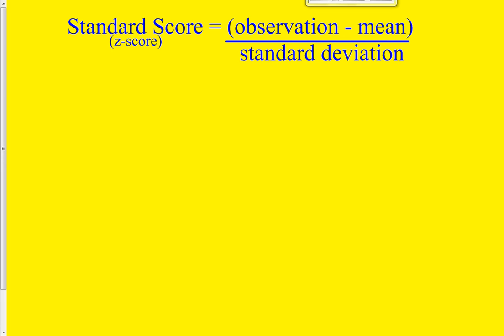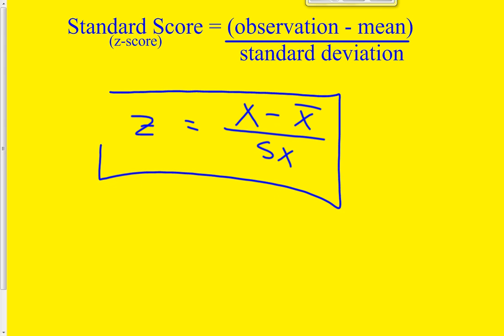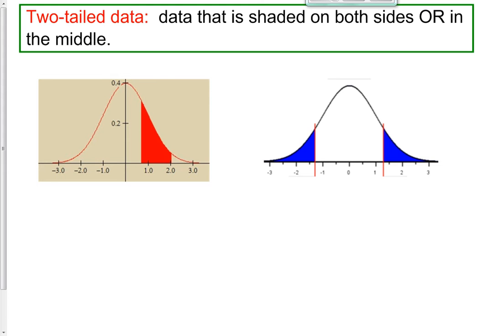We're going to be using this formula again. The standard score — the way you calculate it — is you take the observation, we sometimes call that x, you subtract the mean, we call that x-bar, and you divide it by the standard deviation. Remember, a standard score is also called a z-score. For two-tailed data, that just means we're trying to find the percent of observations that lie between two z-scores.